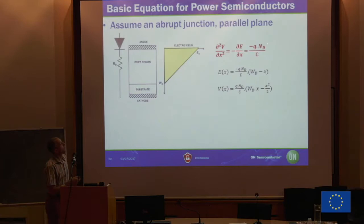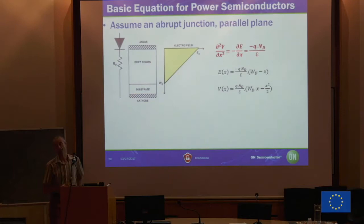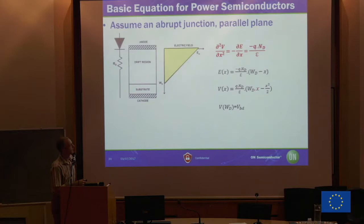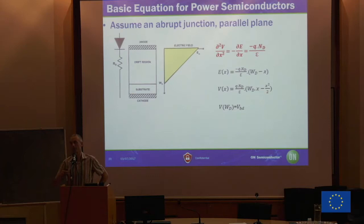The voltage across the junction is basically the integral of this triangle — the area here is just the voltage for the given electric field. The solution has a maximum when x equals the depletion width. That's the voltage where your structure reaches its maximum, which is the breakdown voltage — reached when you hit the critical electric field, which is material dependent. So this relates breakdown to the critical field and the depletion width: it's just the area of this triangle. The depletion width itself is a function of the doping concentration.